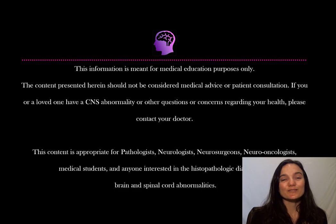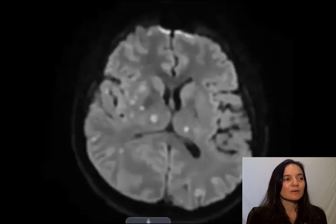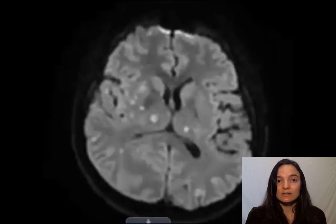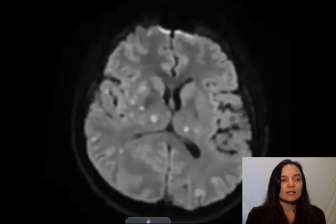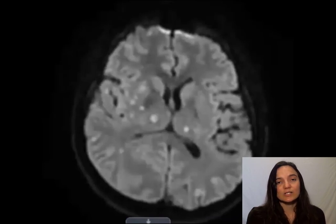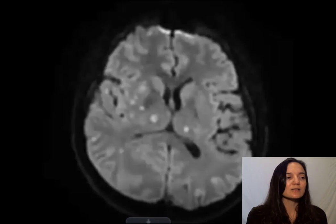Hello and welcome to Adventures in Neuropathology with your favorite neuropathologist Andrea Gilbert. Today we've got a very interesting case to discuss. The very first thing I want to show you is the imaging. Imaging is like gross neuropathology where we're looking at the relationship between lesions throughout the brain. We can't look at the brain of a living person, but we can look at the next best thing, which is the imaging findings.